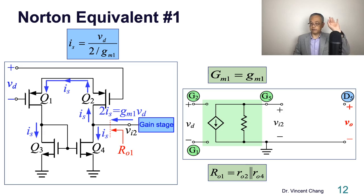Norton equivalent. Here's Norton. The green Norton, downward, going down. GM1 VD through R1. There is a negative sign. Why? Because VI2 divided by VD is negative GM1 times R1. There's a negative sign.